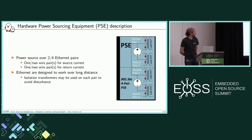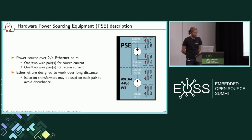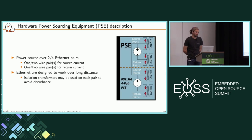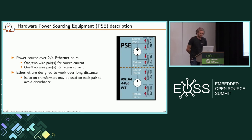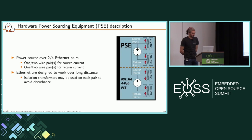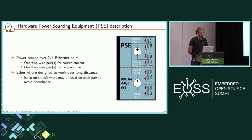On the hardware description side, it's a simple power source that applies source current on one pair and return current on the other pair, and does this for two pairs in case of PoE four-pair. Since Ethernet is designed to work over long distances, and the data and power are on the same pair, we usually use isolation transformers to avoid any disturbance on the data.